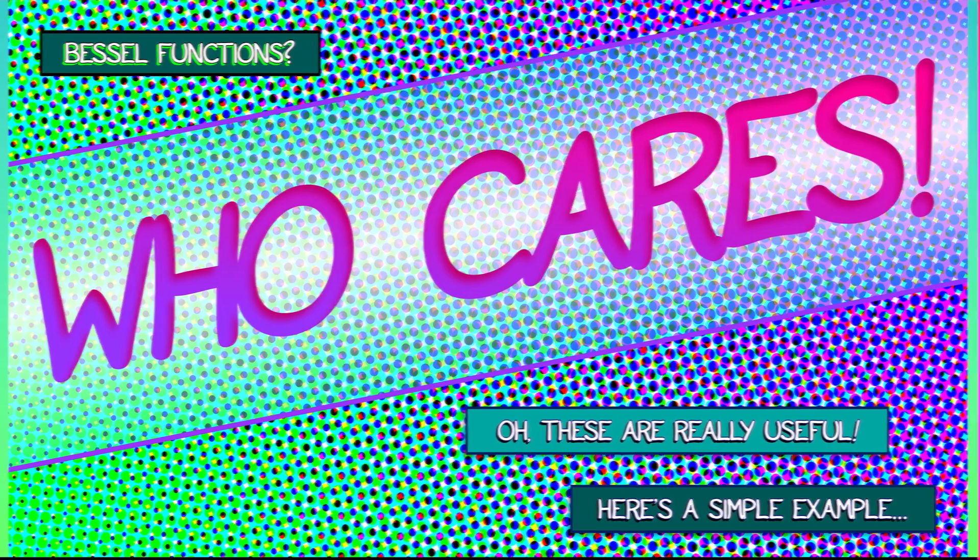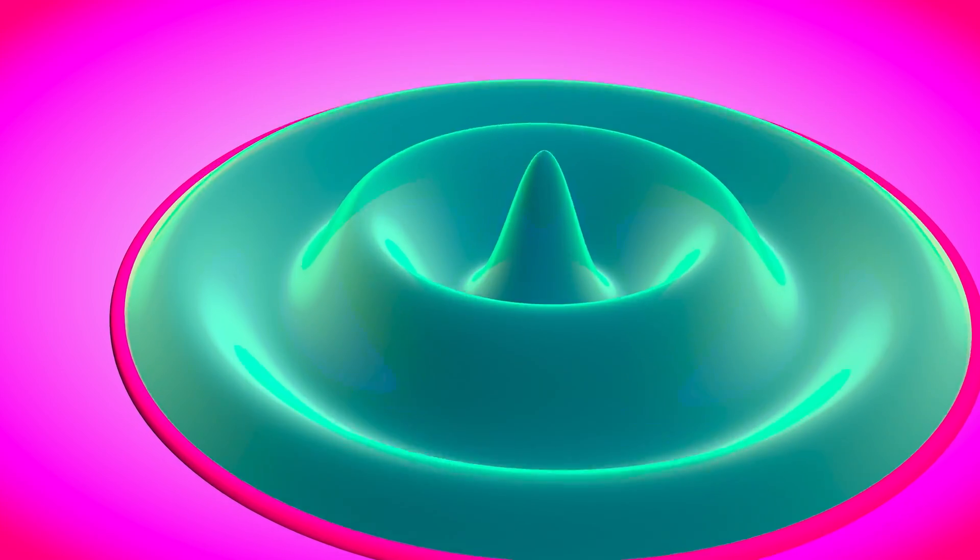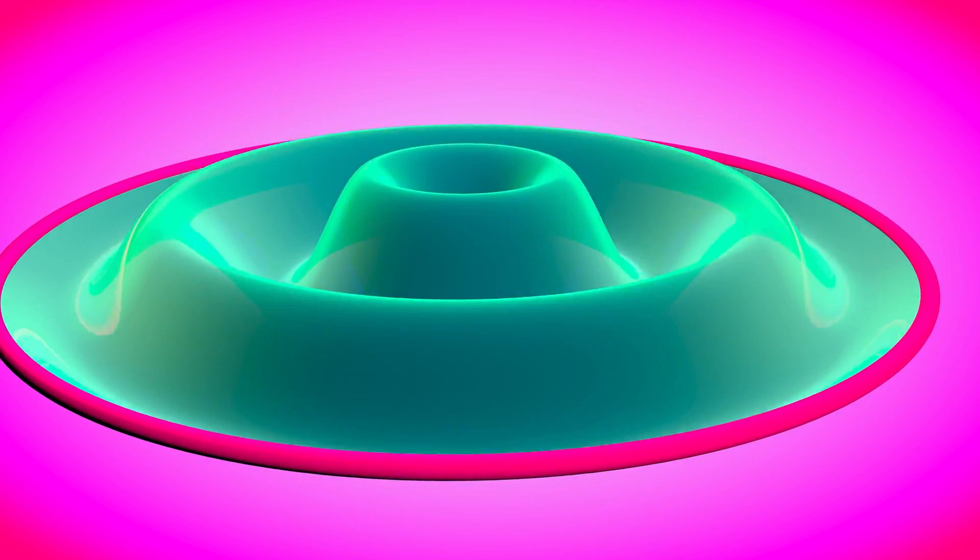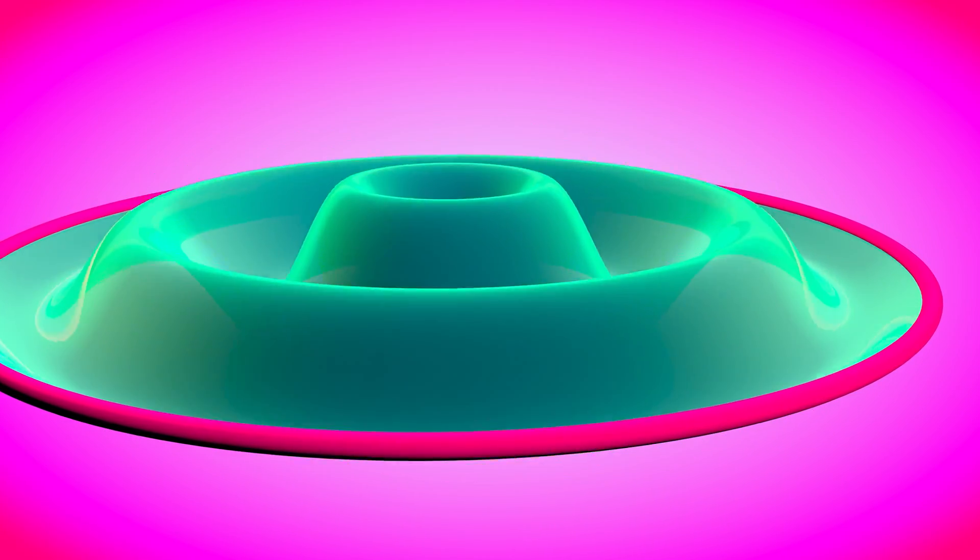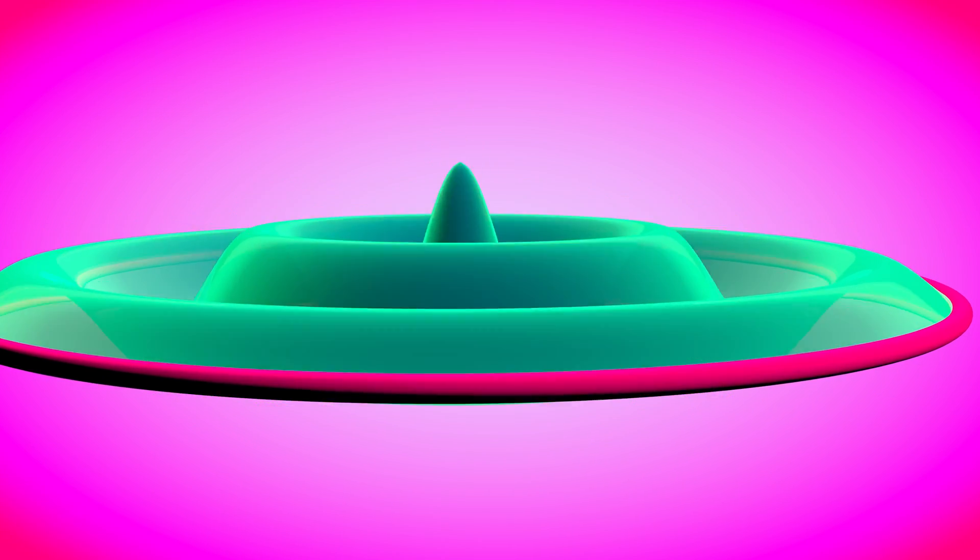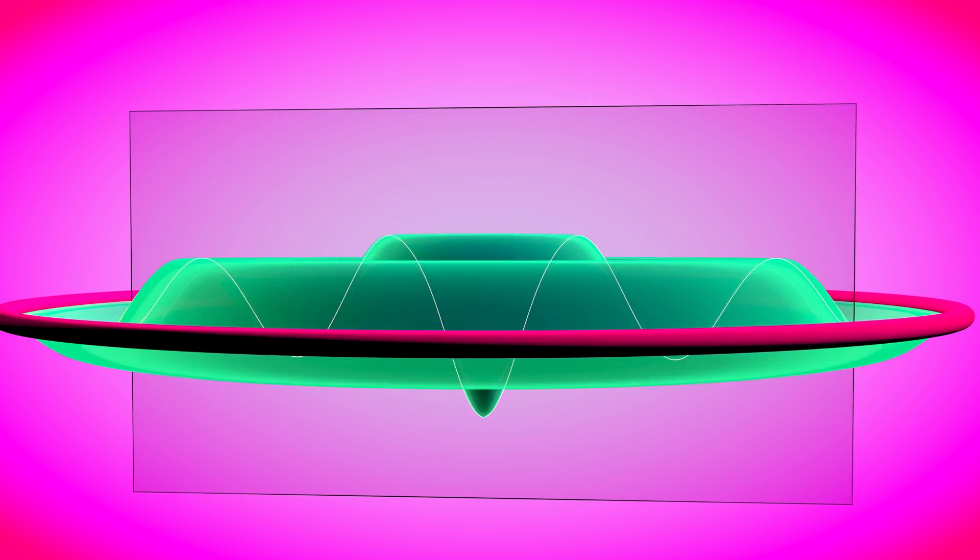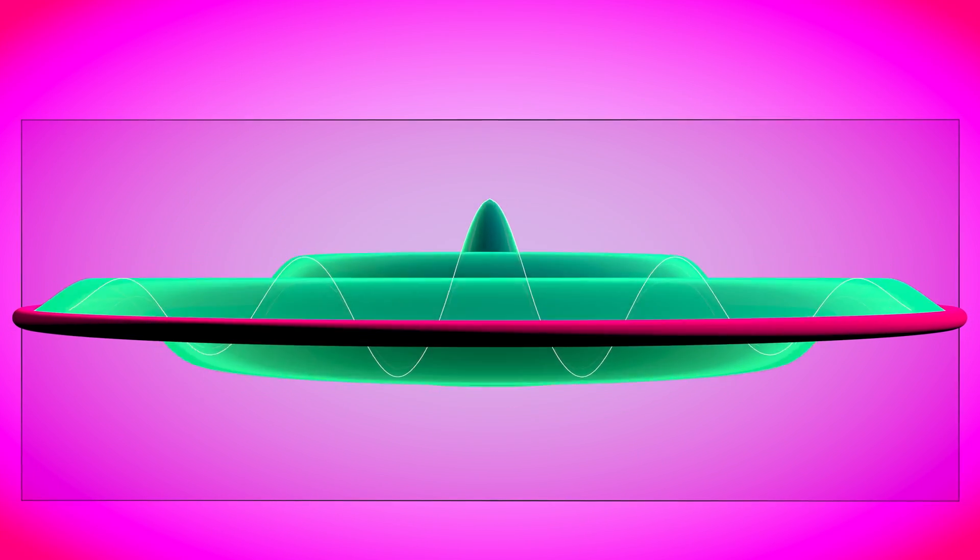Let's say you have a circular membrane like a drum. If you strike it in the right manner, it sets up a radially symmetric wave. The displacement as a function of distance to the center is a Bessel function of the form J-naught times a sinusoidal function of time. The displacement magnitude is controlled by J-naught.